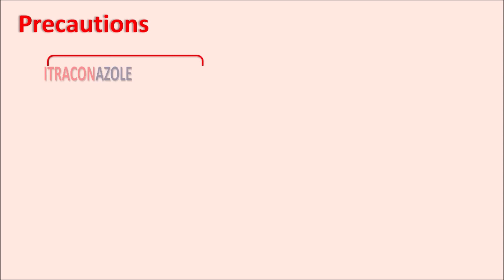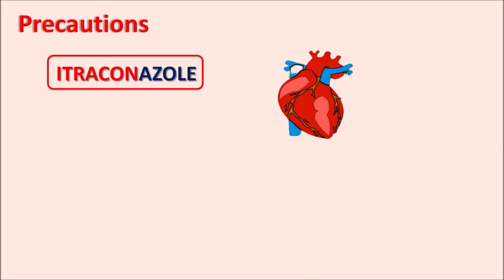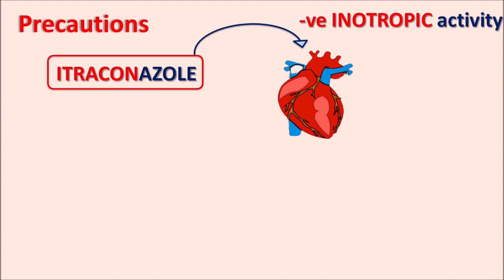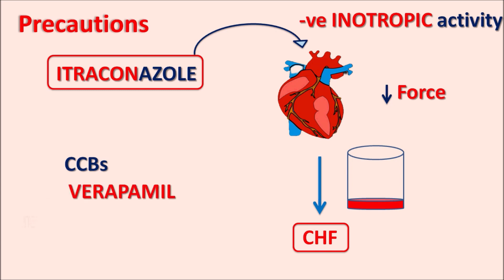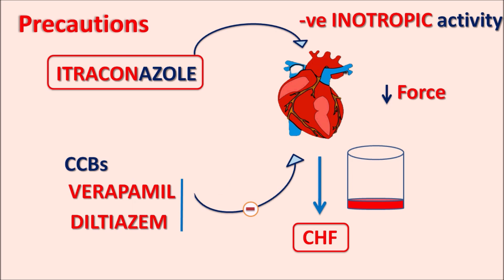One of the important precautions of itraconazole is its effect on the cardiac system. Itraconazole can produce negative inotropic activity resulting in decreased force of contraction and decreased cardiac output, which can cause congestive heart failure. So if a patient already has risk factors for congestive heart failure, itraconazole should not be used. Calcium channel blockers such as verapamil and diltiazem also produce negative inotropic activity, and when combined with itraconazole the risk of congestive heart failure is further enhanced.